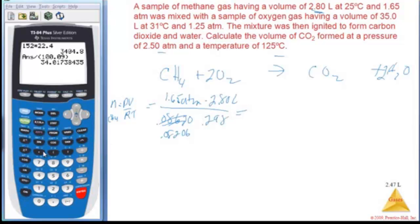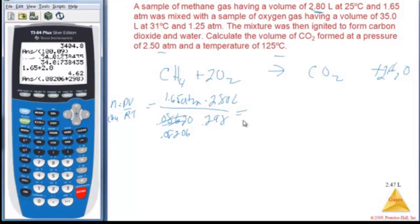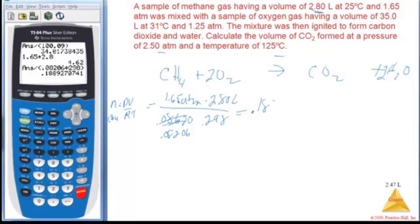And if I punch that, I get 1.65 times 2.8 equals, divide by 0.08206 times 298, close my parentheses, and I get 0.188927, and it's good to carry as many sig figs as you can or as reasonable, and then you round at the very end.